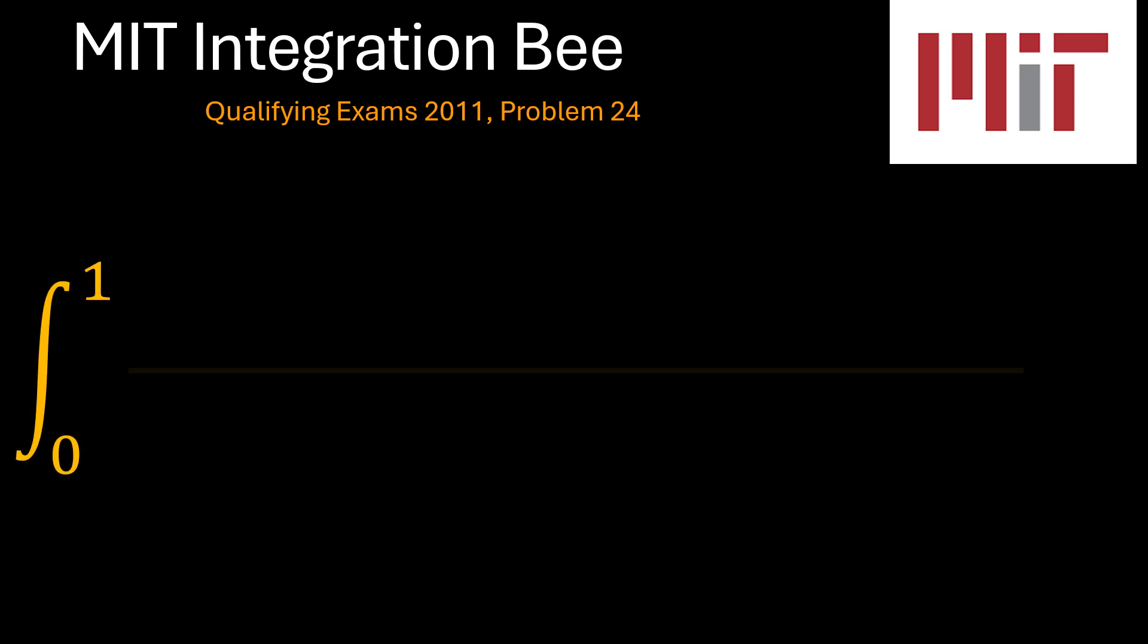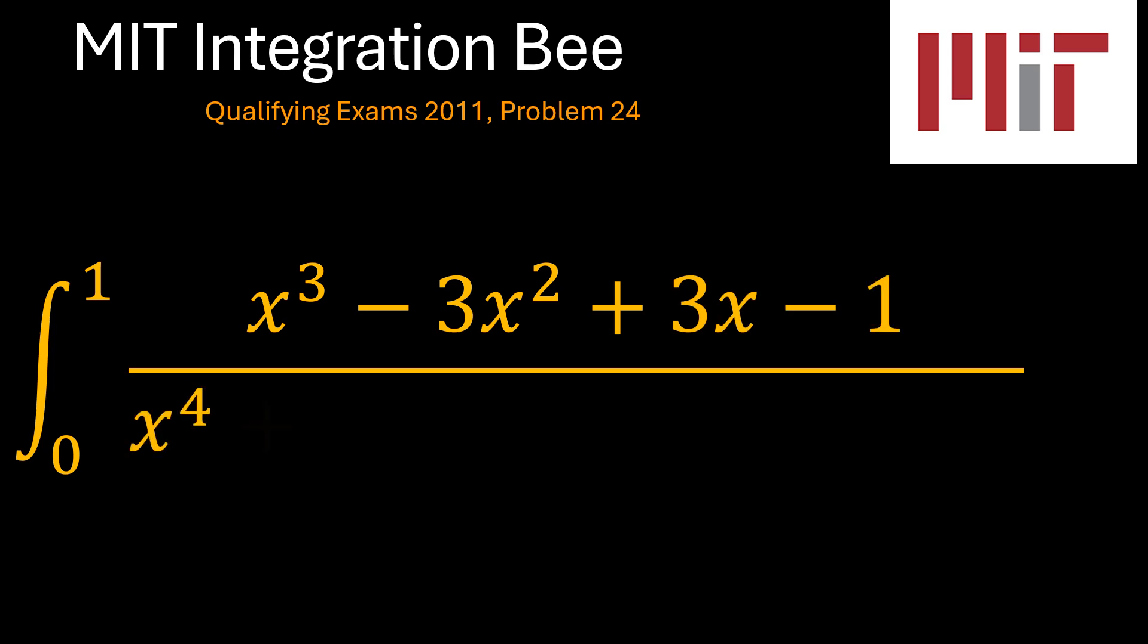The next is problem number 24, which is the definite integral from x equals 0 to x equals 1 of x³ - 3x² + 3x - 1 over x⁴ + 4x³ + 6x² + 4x + 1.